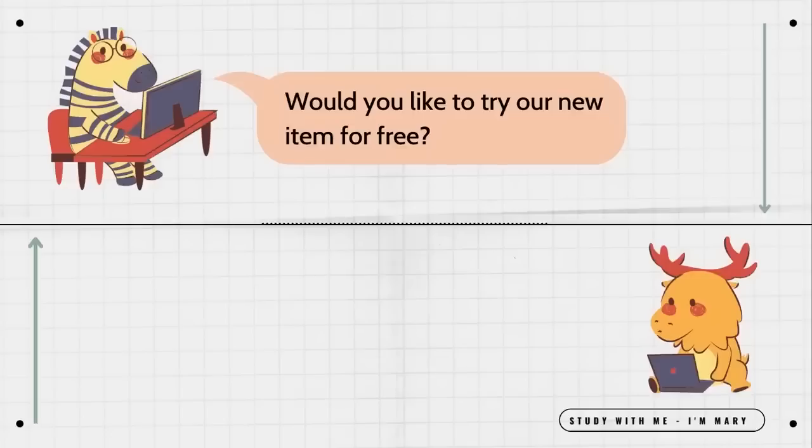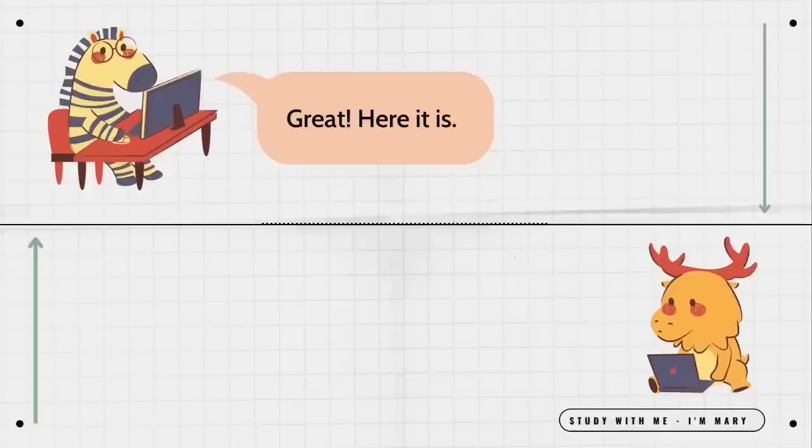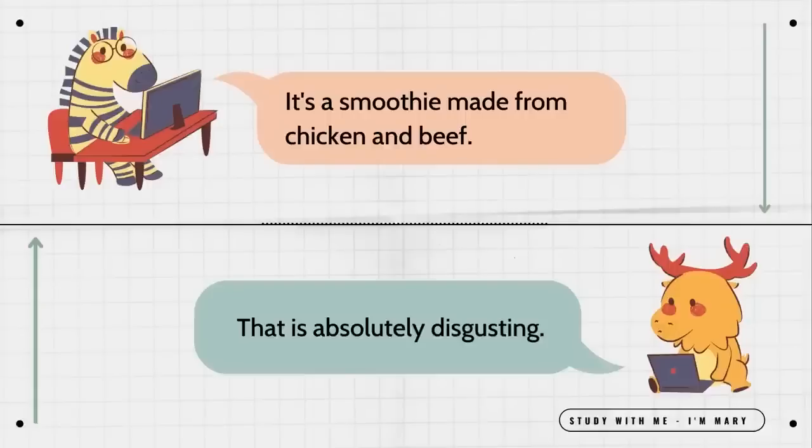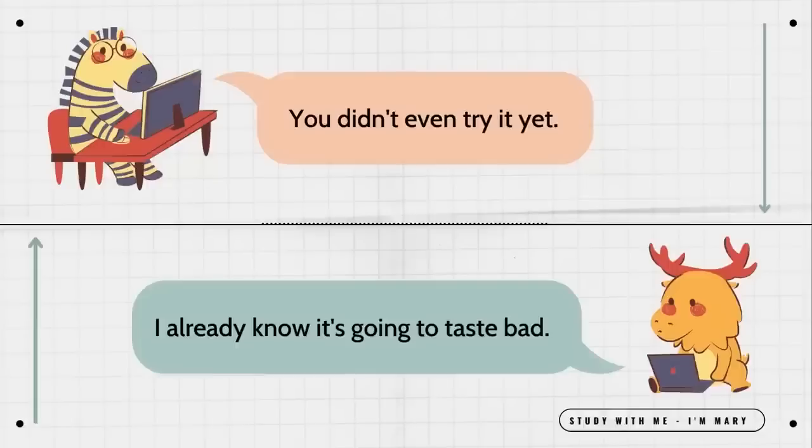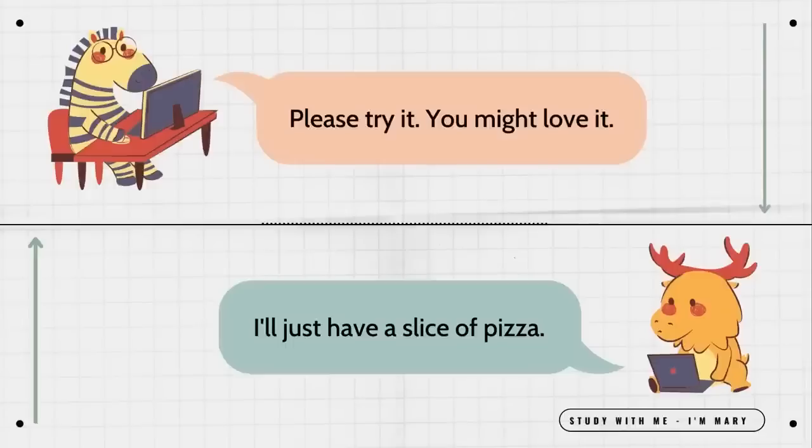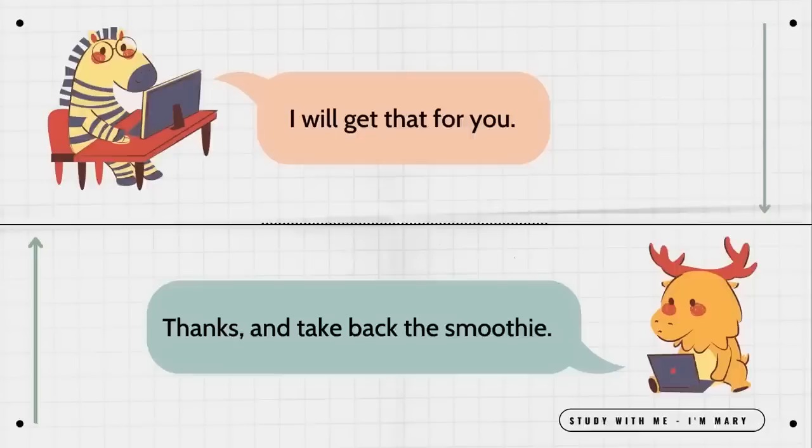Would you like to try our new item for free? If it's free, then of course. Great. Here it is. What is it? It's a smoothie made from chicken and beef. That is absolutely disgusting. You didn't even try it yet. I already know it's going to taste bad. Please try it. You might love it. I'll just have a slice of pizza. I will get that for you. Thanks. And take back the smoothie.